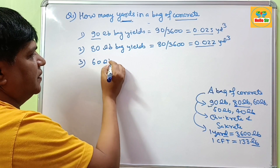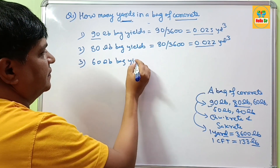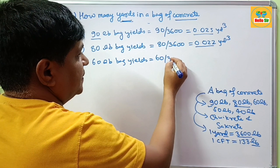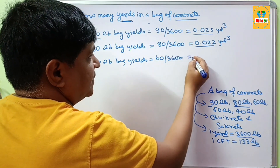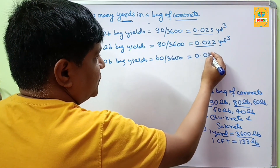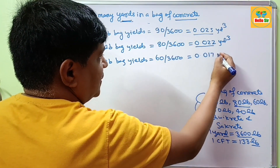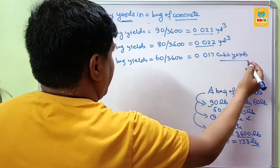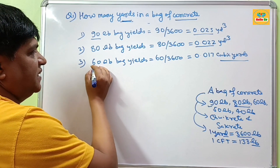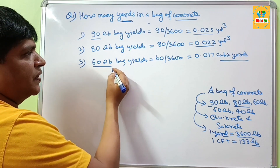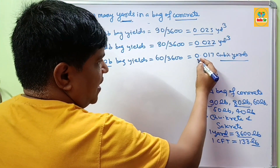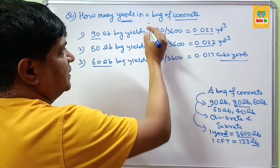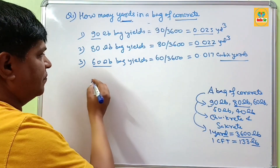For a 60 lb bag yields: 60 divided by 3600 comes out to about 0.017 cubic yards. The answer to how many yards are in a 60 lb bag of concrete is approximately 0.017 cubic yards.